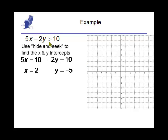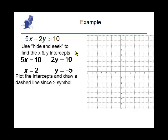Since this is a strictly greater than, we're going to use a dotted line. So let's graph the line using the x and y-intercepts and make the dotted line.